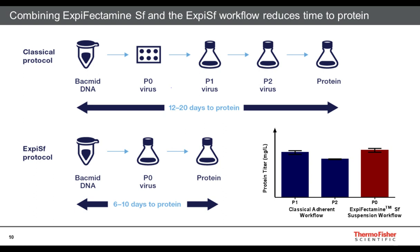What amount of baculovirus do you use for protein expression? We recommend using an MOI of 5 — meaning 5 viral particles per cell — to get optimal expression at higher densities. Regarding confidence in P0 virus for protein production: at this point we have generated viruses for approximately 5-10 different proteins and have seen good consistency in performance across all of them.